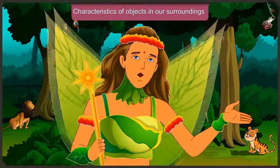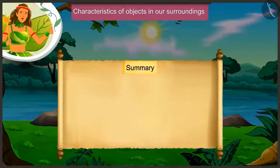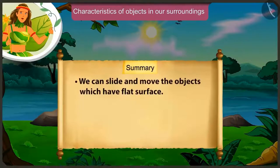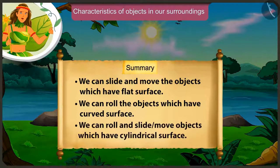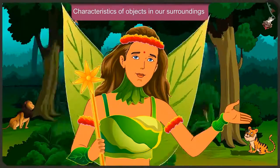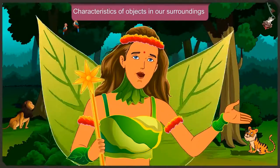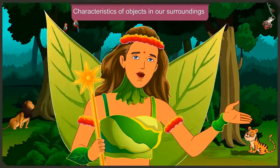Today we understood some interesting facts about the characteristics of objects around us. We can slide objects with a flat surface. We can roll objects with a round surface. And we can roll and slide objects with a cylindrical surface. In the next video, we will learn more characteristics of objects around us.